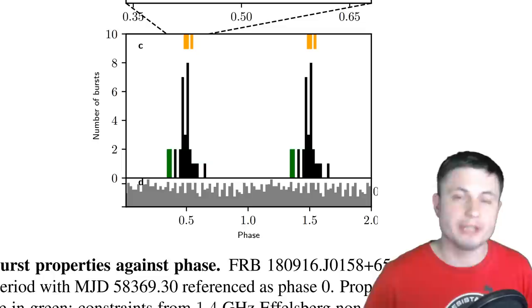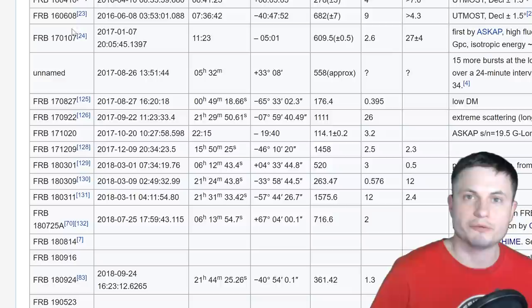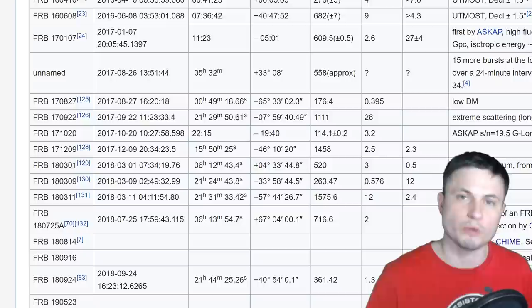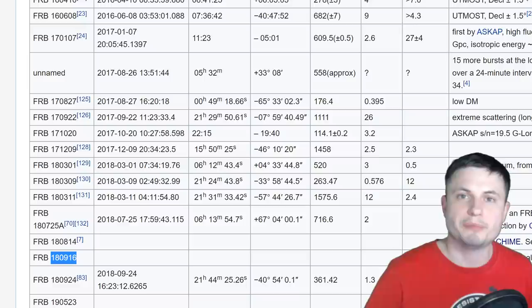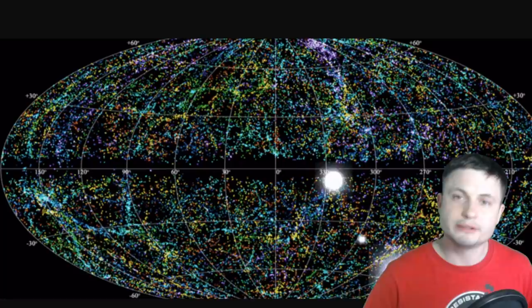They actually observed this unusual fast radio burst over 400 times over a period of several years. And in that period, they discovered that the 16-day cycle was more or less easily predictable. Now, of all of the previous FRBs we've found, only some of them, I believe 10 or so, were actually repeatable. The rest only happened once. But of all of the ones discovered, only this one right here seems to be the one with the actual predictable pattern. All of the other ones happened once or twice or maybe several times, but there was no pattern whatsoever. And because of this discovery, we're now a little bit closer to maybe finally solving the mystery of what's really causing these unusual flashes.